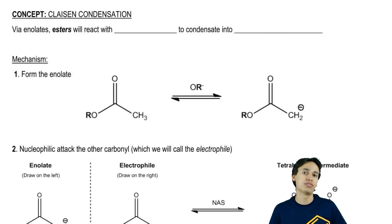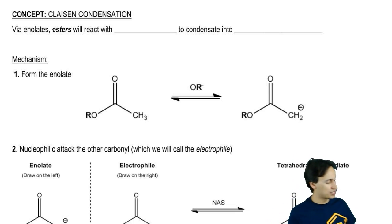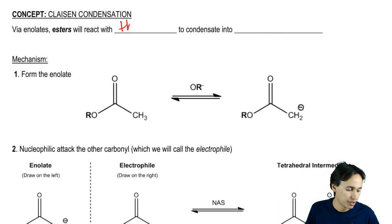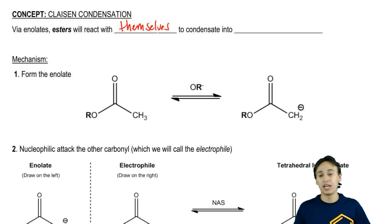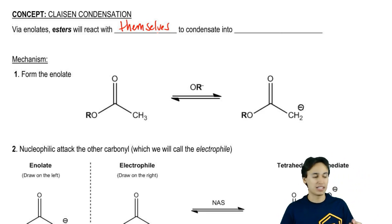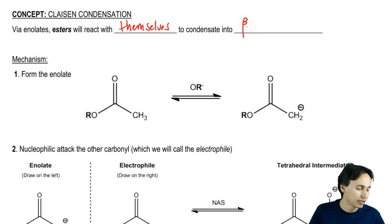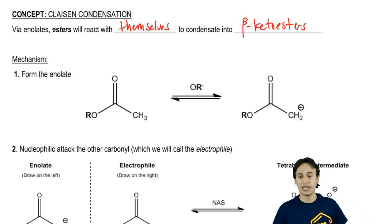Esters like other carbonyls can form enolates. We've discussed this in the past. When these esters form enolates in the absence of other electrophiles, they can react with themselves. When they react with themselves, they're going to condensate into what we call beta-keto esters. That's the functional group that we always get at the end.